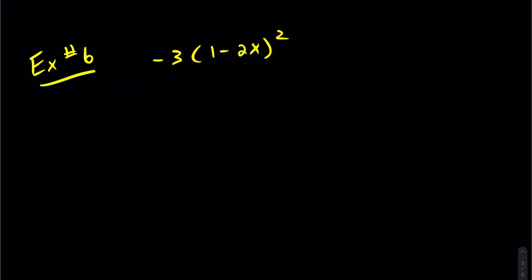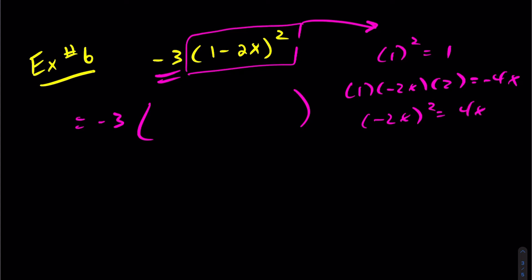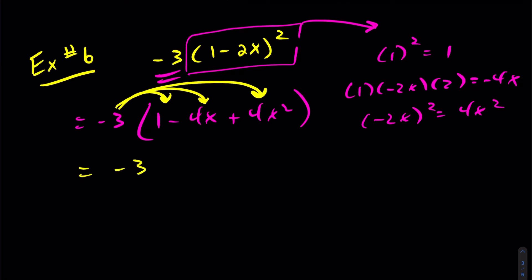Let's try the next one. Same idea — hold off on the minus 3, put that to the side, and expand the binomial. Square the first: 1 squared is 1. First times second times 2 gives negative 4x. Square the last gives 4x squared. So we have 1 minus 4x plus 4x squared. Now go ahead and distribute the minus 3 into the brackets, which gives minus 3 plus 12x minus 12x squared.